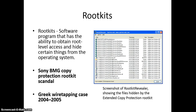Rootkits are very nasty. There's been evidence of that with the Sony BMG case and the Greek wiretapping case back in 2005 — you should be able to research both of those on your own. Essentially, if these get installed at the root level or kernel level of your system, they are very, very difficult to remove. Not even a complete machine wipe can get these removed. There are some detectors out there, like Rootkit Revealer, which can show the hidden files. Oftentimes rootkits hide from antivirus by changing themselves slightly to circumvent any type of detection.